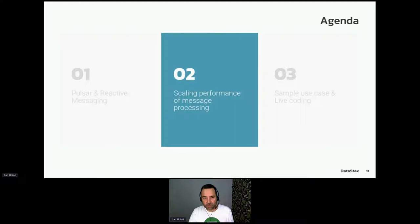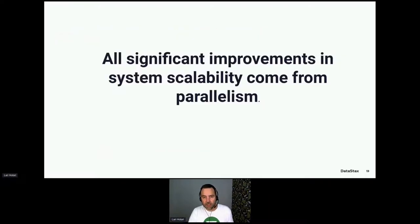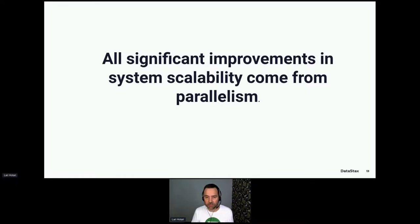We'll now look into scaling and performance of message processing, since performance is an important part of any high-scale messaging solution. All significant improvements in system scalability come from parallelism. In the last 10 years, single CPU core speed hasn't increased much, but we have many more cores. Through the cloud we can have 200 cores available for an application, and to take advantage of this, you have to be able to process things in parallel.